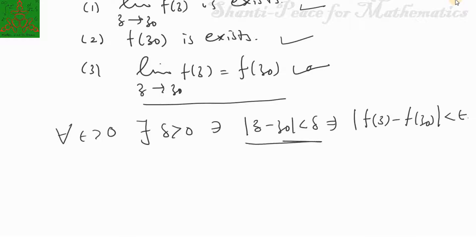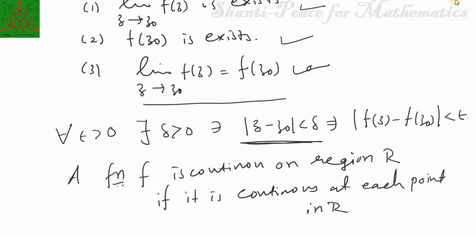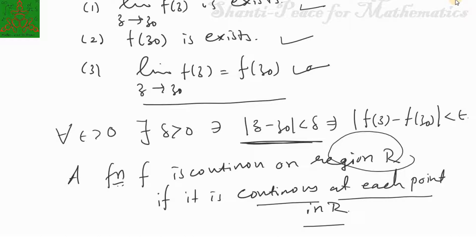Notice here I have not used the deleted neighborhood — I have used the full neighborhood of z₀. A function f is continuous on a region R if it is continuous at each point in R. If f is not continuous at z₀, we say z₀ is a point of discontinuity.